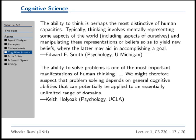So that's expressed in this quotation here. The ability to solve problems is one of the most important manifestations of human thinking. We might therefore suspect that problem solving depends on some general cognitive ability, not some little special cells that grow in some part of the brain. You have this general ability to plan that can potentially be applied to an essentially unlimited range of domains.